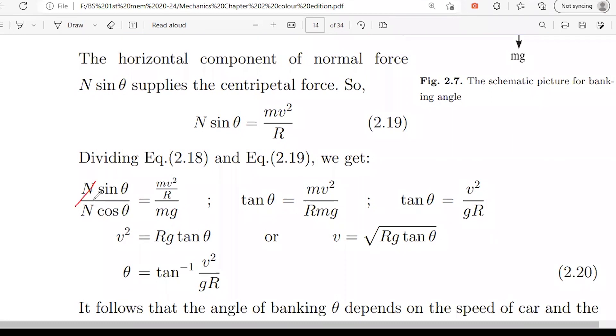N to N value cancels. And you have N sin theta over N cos theta. This is equal to tan theta.